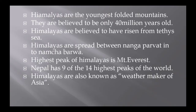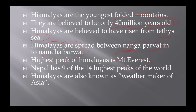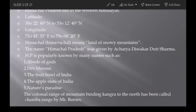The Himalayas are the youngest folded mountains. Peninsular mountains are over 1,000 million years old, but the Himalayas are only about 40 million years old — that is why they are called the youngest folded mountains. They rose from the Tethys Sea. The Himalayas extend from Nanga Parbat in the north to Namcha Barwa in the east. The highest peak is Mount Everest, located in Nepal. Nepal has 9 of the 14 highest peaks in the world. The Himalayas are also called the 'weather maker of Asia.' Himachal Pradesh lies in the western Himalayas.